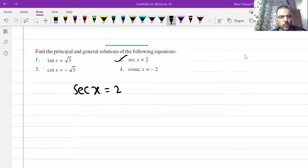This is our exercise 3.4. You are going to find the principal and general solution. I am talking about the principal solution. What is sec x equal to 2? Compare it from the table.